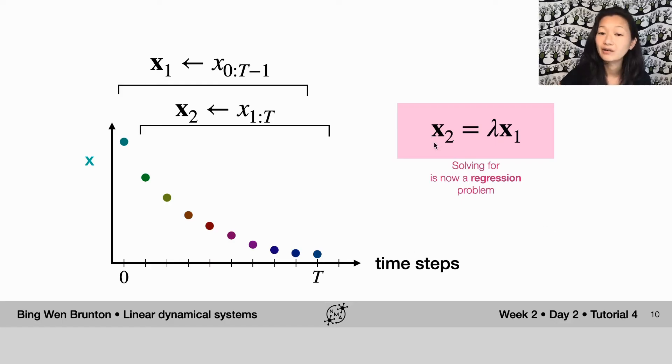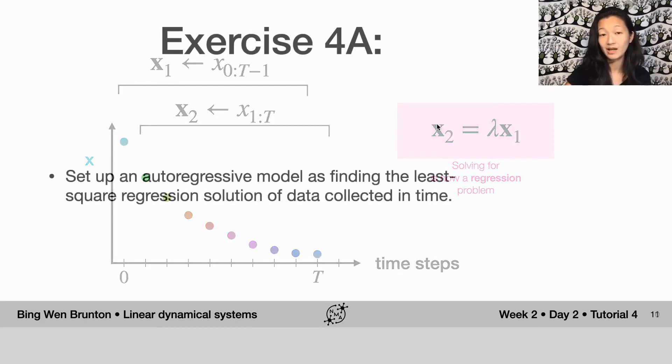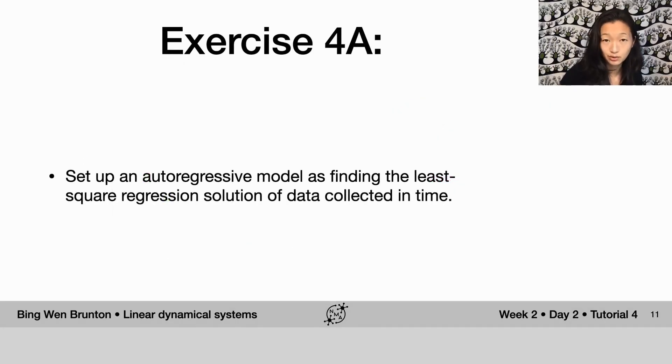Now we can solve this equation as a regression problem, and the solution should give us the underlying governing equation for the coefficient lambda. The first exercise in this tutorial is to set up that model I just described. We're going to set it up as a regression problem of x2 equals lambda x1, and we're going to find the solution by solving it as a least squares regression problem. This is known as an autoregression problem because auto just means self, and so it's literally a regression model of the data onto itself.